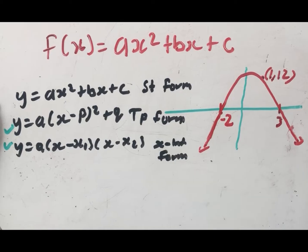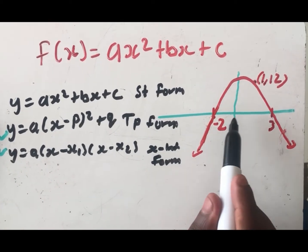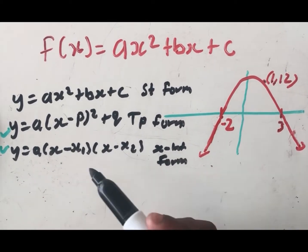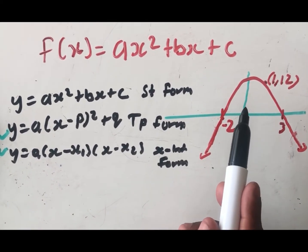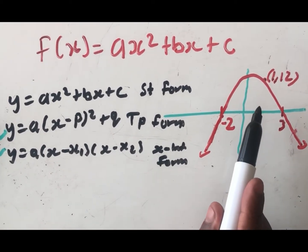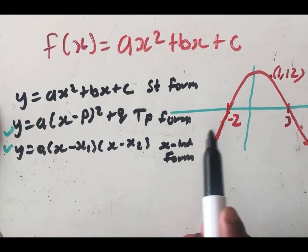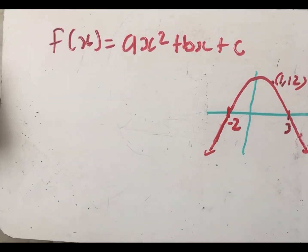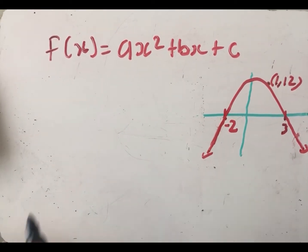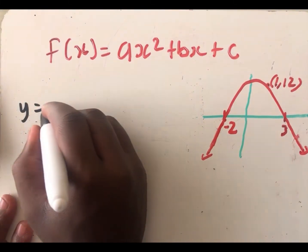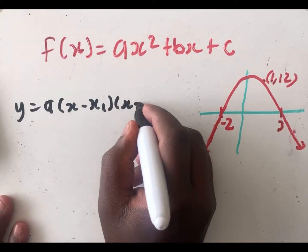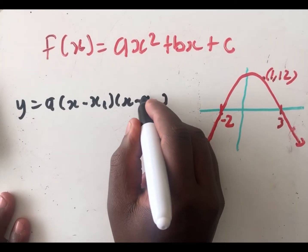How do you know which form to use? It depends on what you're given. If you are given the x-intercepts in the graph, then you use the x-intercept form. If you are given the turning point, then you use the turning point form. What you need is either the x-intercepts and an extra point, or the turning point and an extra point.